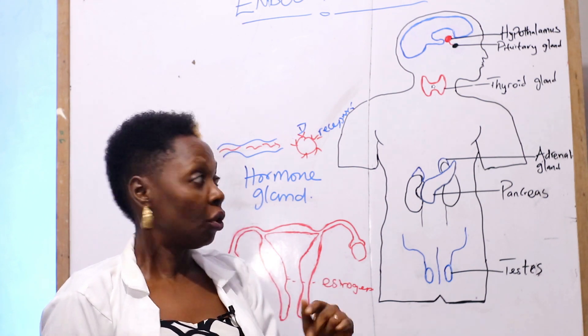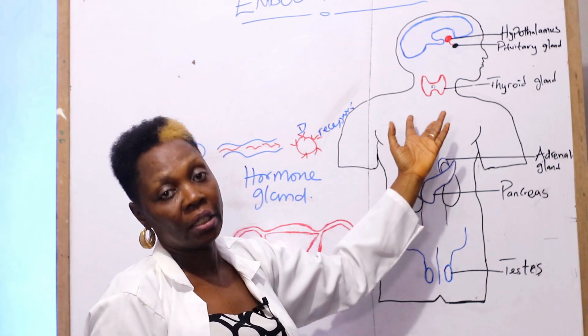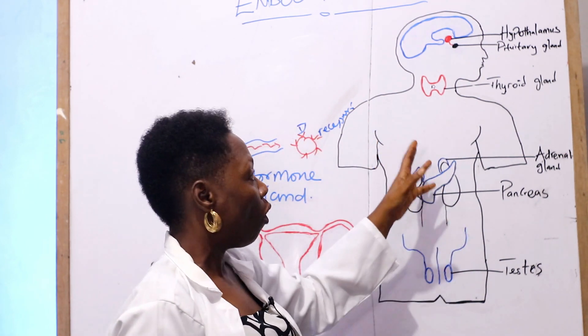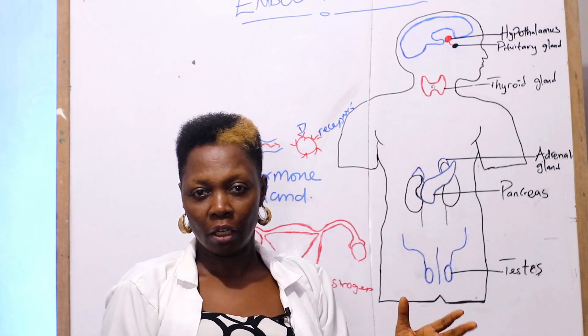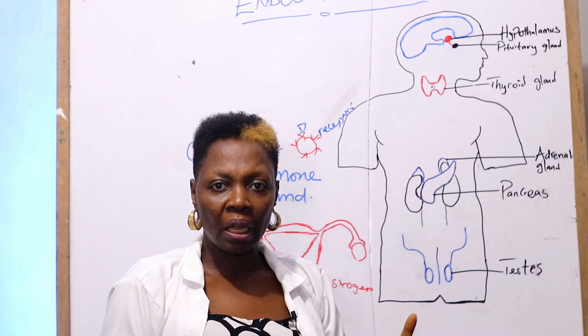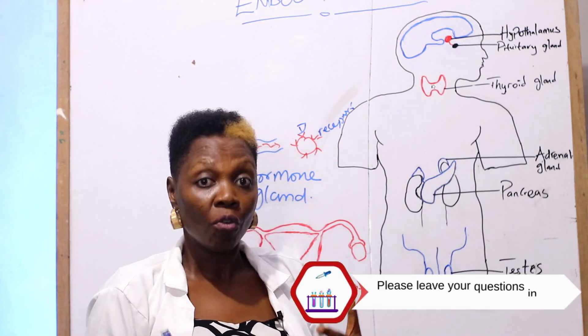So, we have the thyroid gland and the parathyroid gland, which is located around the neck region, responsible for metabolic processes in the body. You will understand why sometimes some people feel lethargic, they can't move—it's actually attributed to a thyroid function.